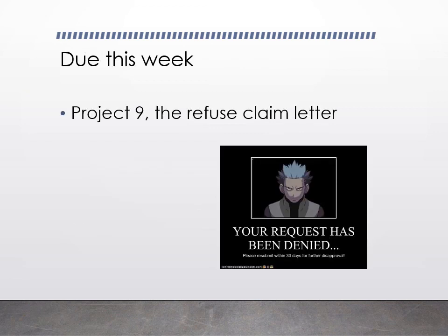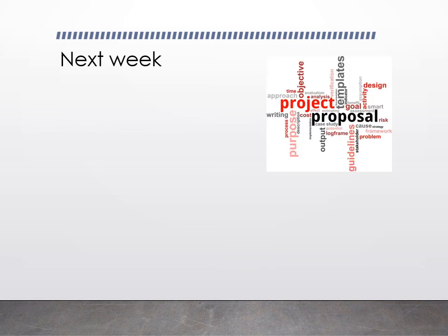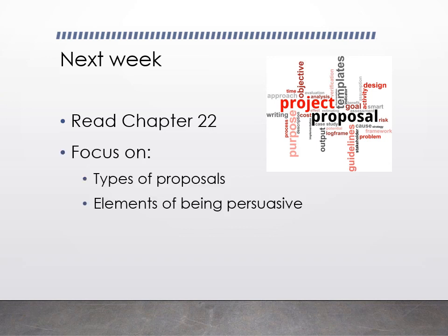This week you are going to write project nine, the refused claim letter. You won't be quite as negative as the meme here, but you will have to say no in a kind but firm fashion. Next week we're shifting gears — you'll need to read chapter 22 on different kinds of proposals, and we'll also discuss being persuasive. If you have any questions about this week, post them to the questions discussion forum and I'll be happy to answer. Catch you next week!